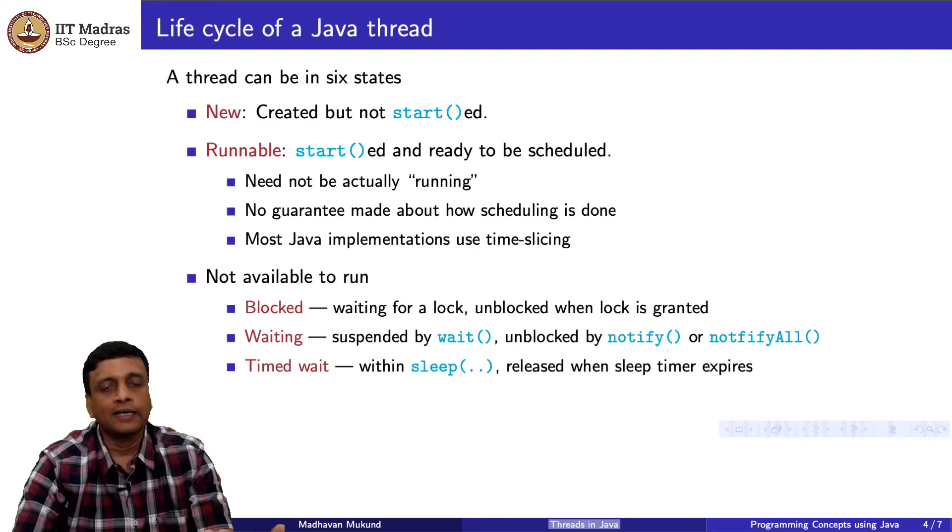It is the system which is keeping track of which threads are blocked on which locks. And when the lock gets released, it is the system, the underlying system, the operating system, and the JVM's job to go and find the threads which are waiting on this lock and wake them up and then decide which one of them will run. That is if you are waiting for a synchronized lock.